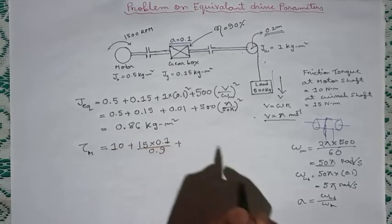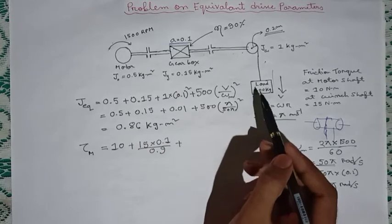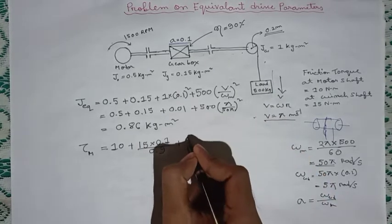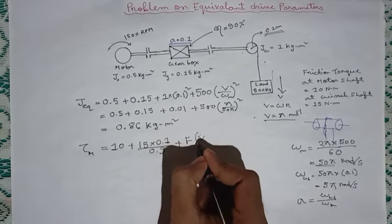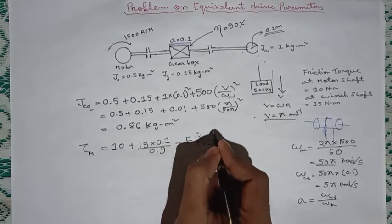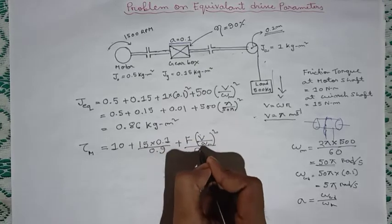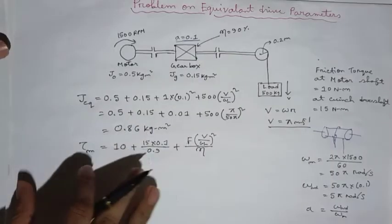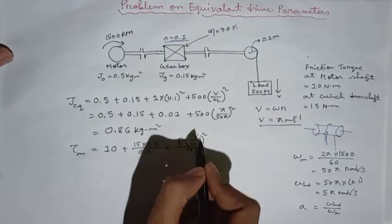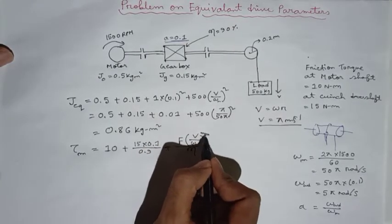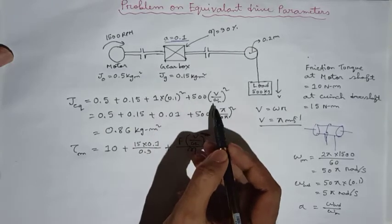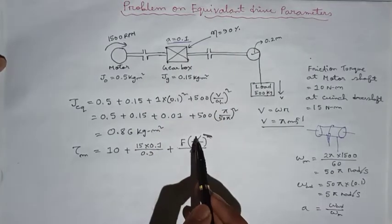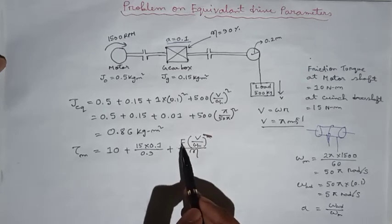Plus, now for this load we have to write F times v by omega m divided by the efficiency. Now, oh sorry, there should not be square here. Square is present only in the moment of inertia term. Here we know the efficiency, we also know the velocity v. What we don't know is the force F.